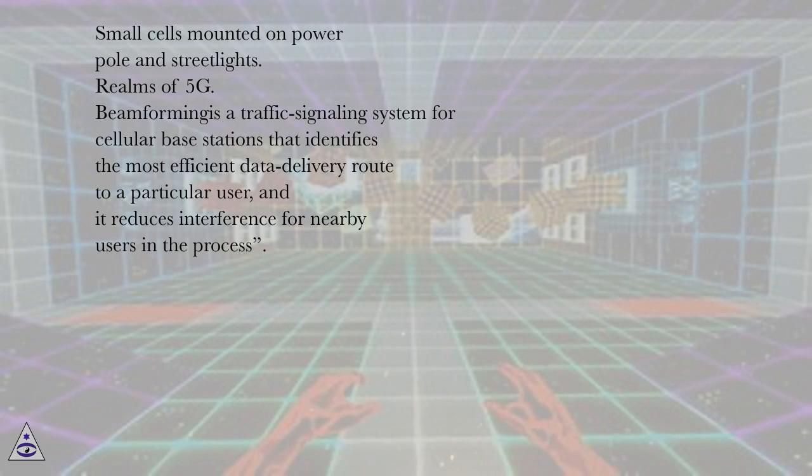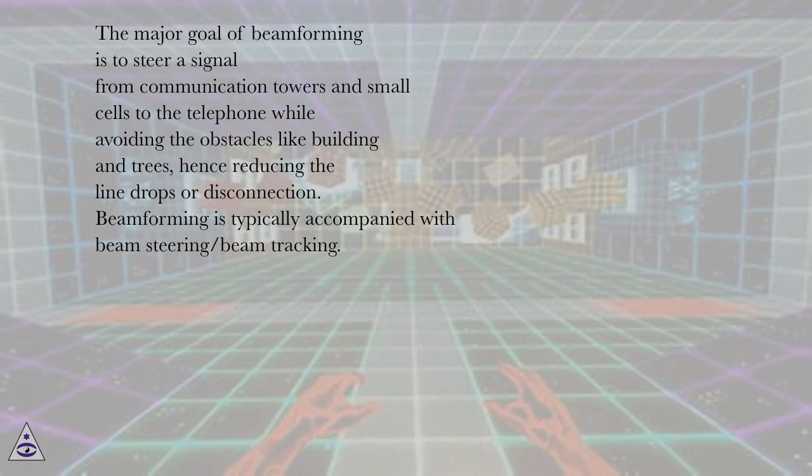Beamforming is a traffic signaling system for cellular base stations that identifies the most efficient data delivery route to a particular user, and it reduces interference for nearby users in the process. The major goal of beamforming is to steer a signal from communication towers and small cells to the telephone while avoiding the obstacles like building and trees, hence reducing the line drops or disconnection.